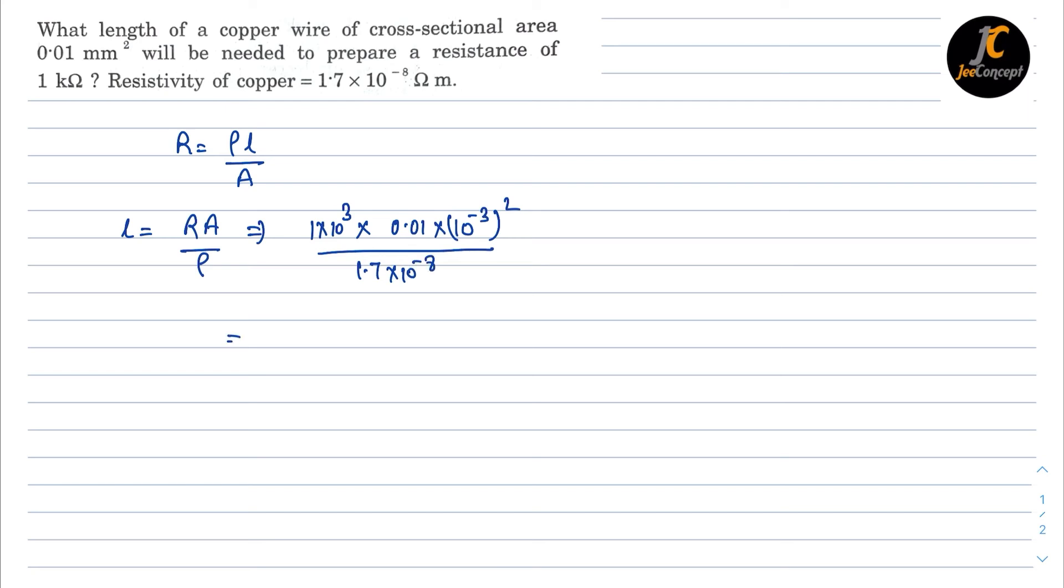So if we will solve this one we will get 0.588 into 10 raised to power 3 or approximately it will become 0.6 into 10 raised to power 3 meter or I can say 0.6 kilo meter. So this is the solution of this problem.